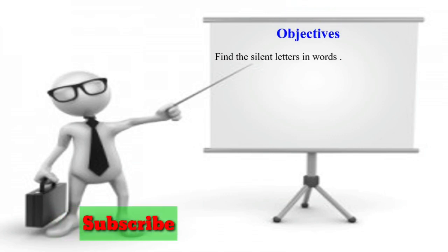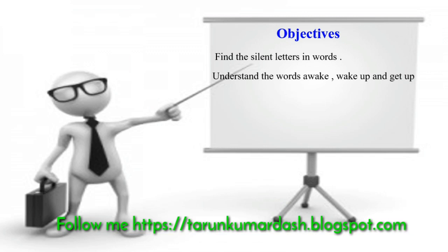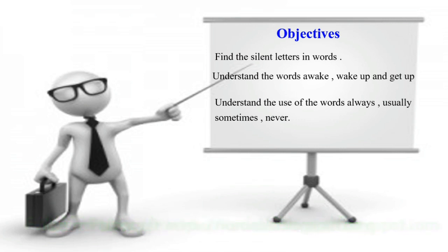Before going to the lesson, let us find out what the objectives we are going to achieve after this lesson. The objectives are: find the silent letters in words, understand the words awake, wake up and get up, and understand the use of the words always, usually, sometimes, never, often, frequently, and so on.